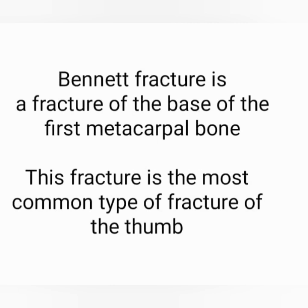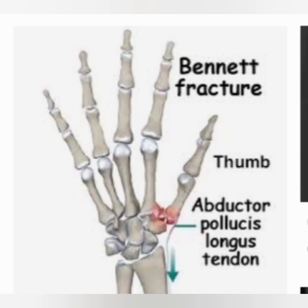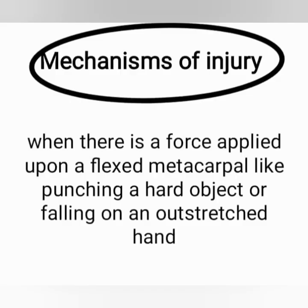Next is Bennett's fracture dislocation. It is a fracture of the base of the first metacarpal bone and is a very common type of fracture of the thumb, as you can clearly identify in the picture. This fracture happens if you punch a hard object with a closed fist.